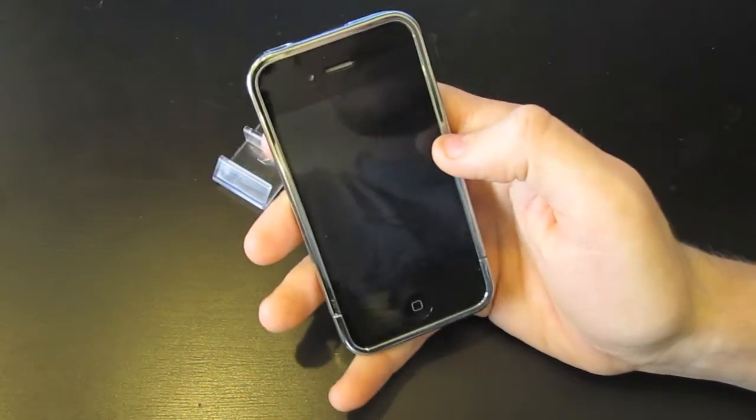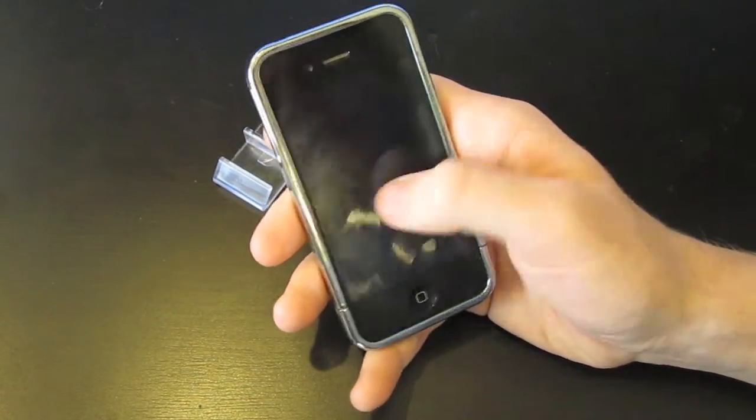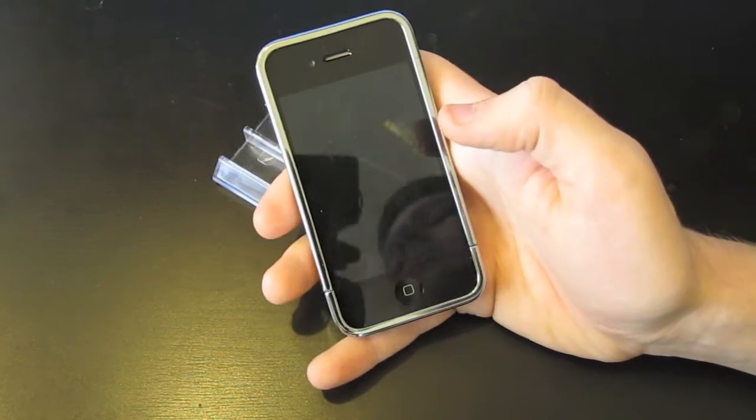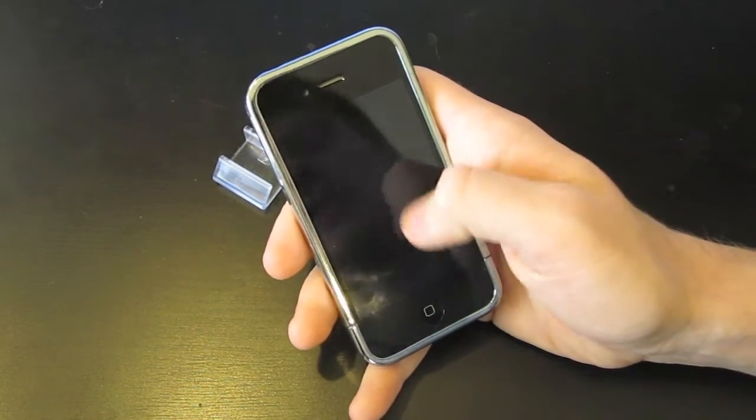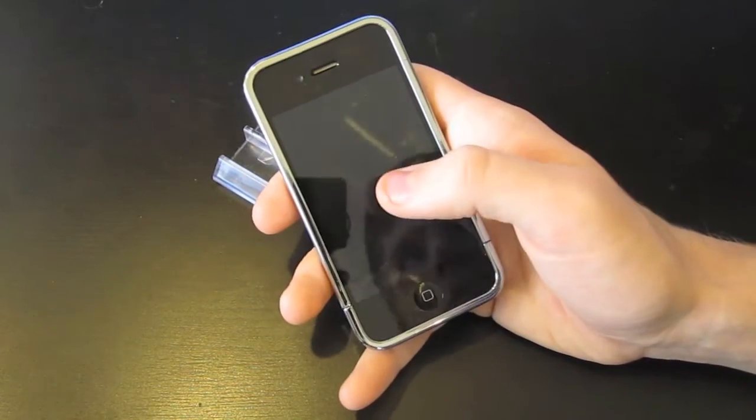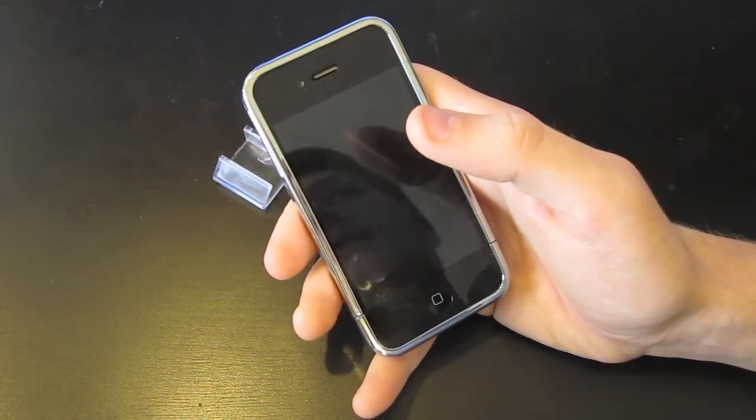And that's pretty much it guys. I'm not sure about screen protectors. I've never used a screen protector on my iPhone before. I used to on my 3G just because it gets scratched easily. But with this glass screen you can't really see scratches on it. But that's pretty much it guys.